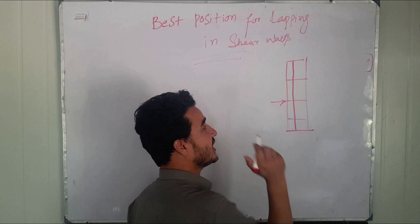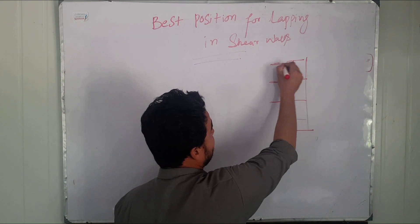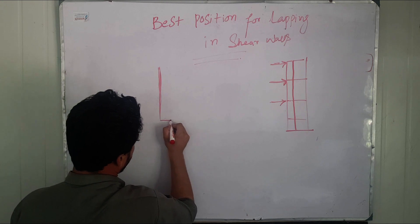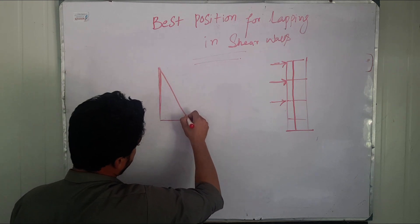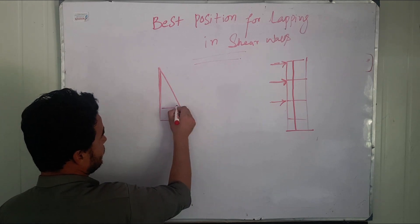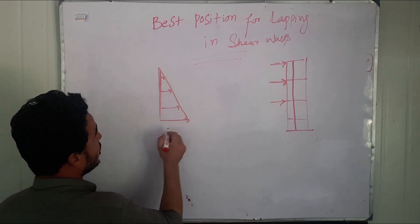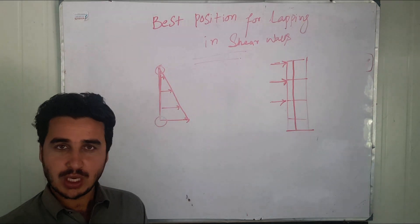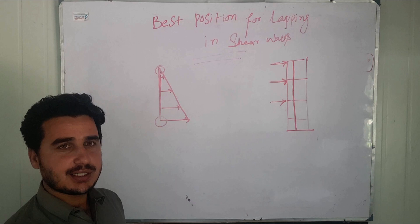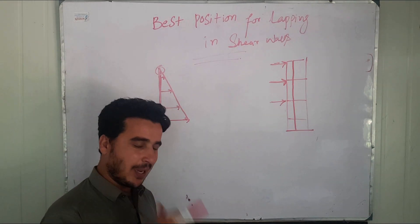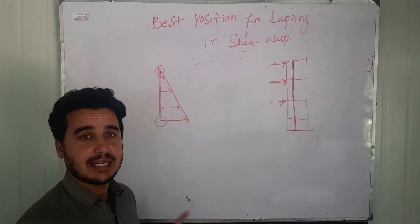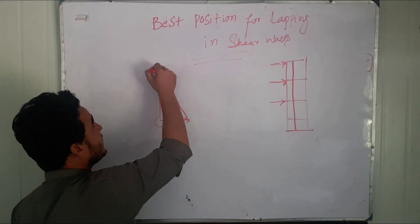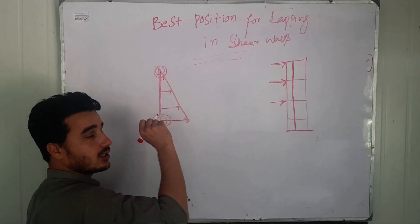Shear walls have nothing to do with gravity loads — they always face loads from the lateral direction. The shear force diagram of a shear wall will look something like this. At the base, the wall will face maximum shear, and at the top it will face minimum shear. At the maximum shear point — which is also the maximum bending point — you cannot provide a lap in any structure. That is the general principle for any type of structure.